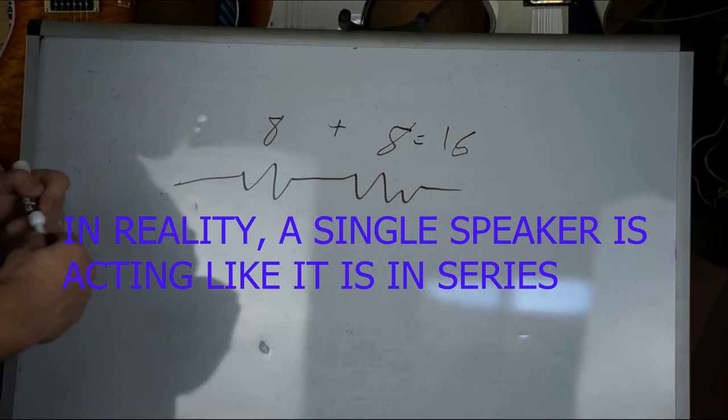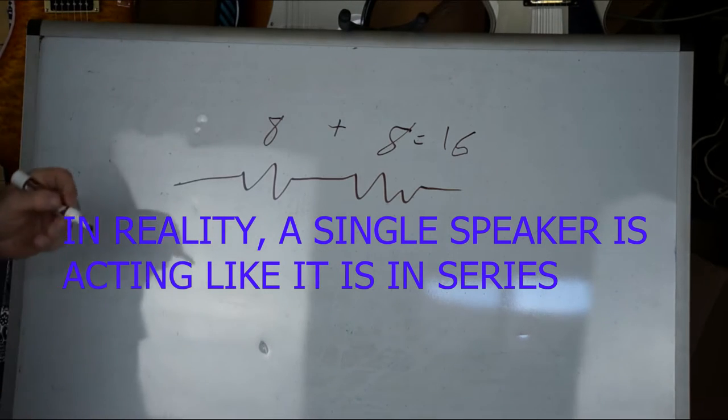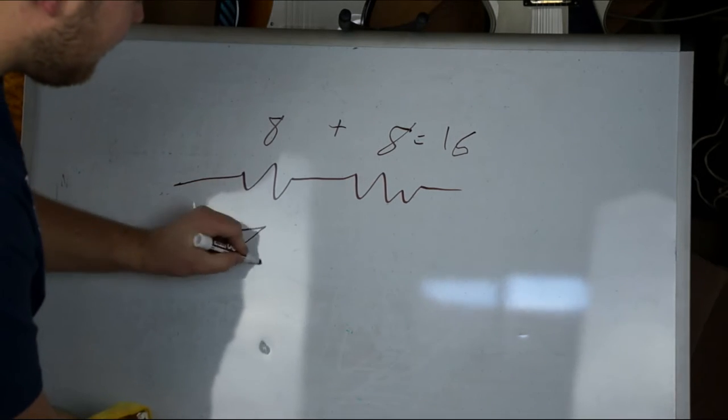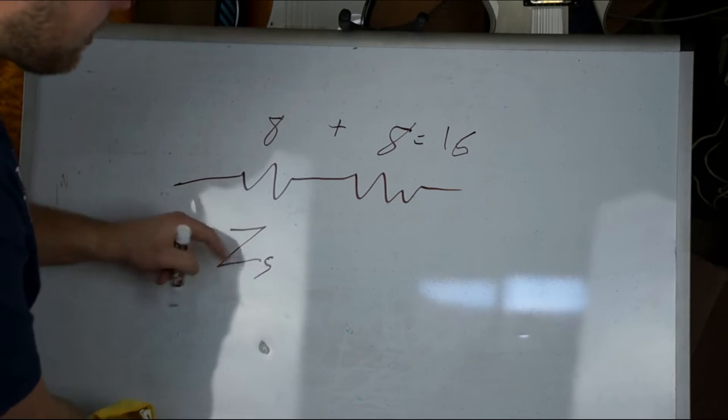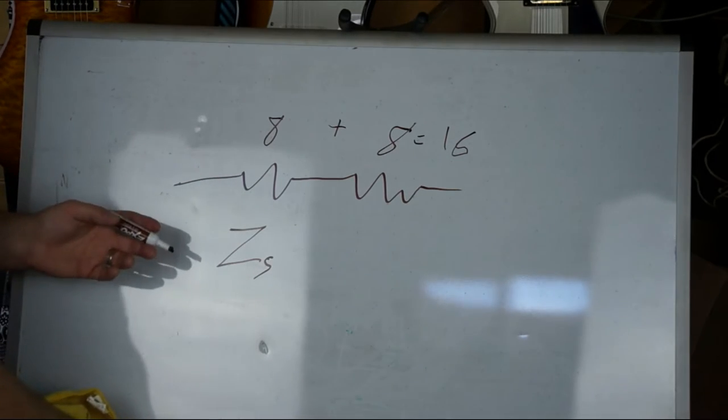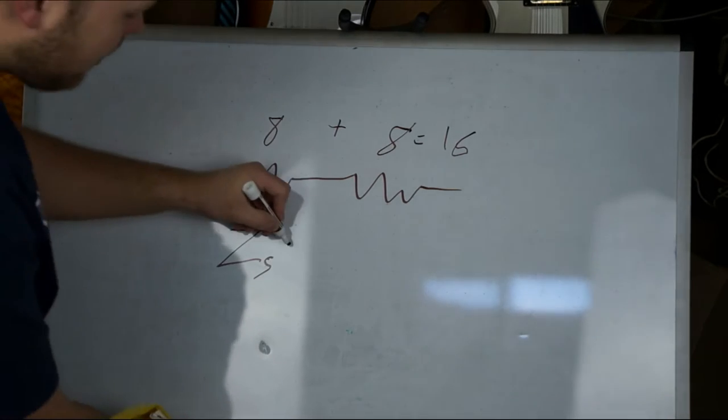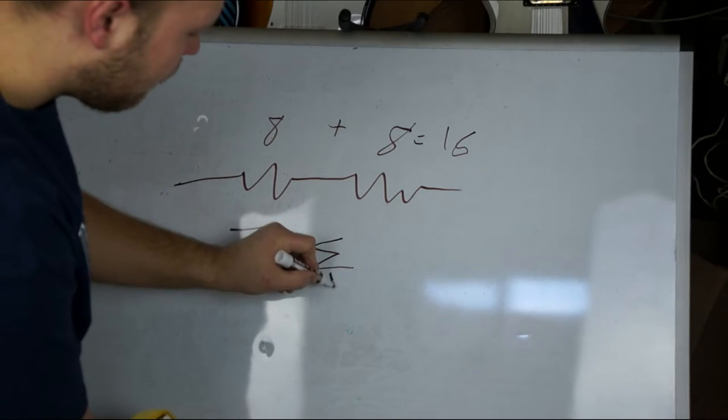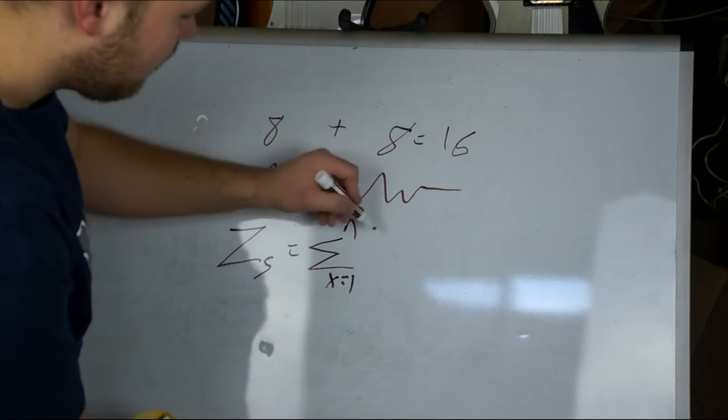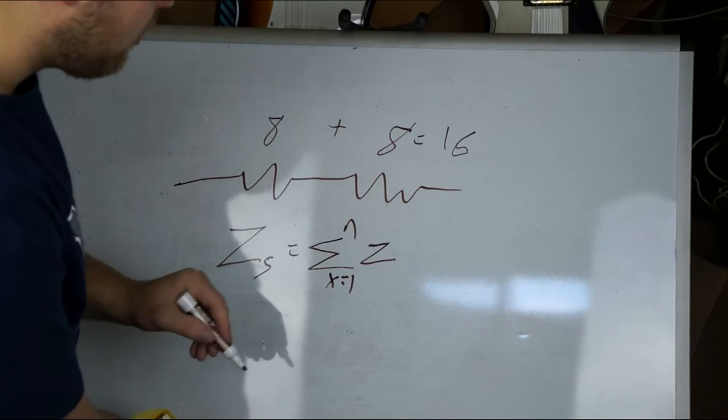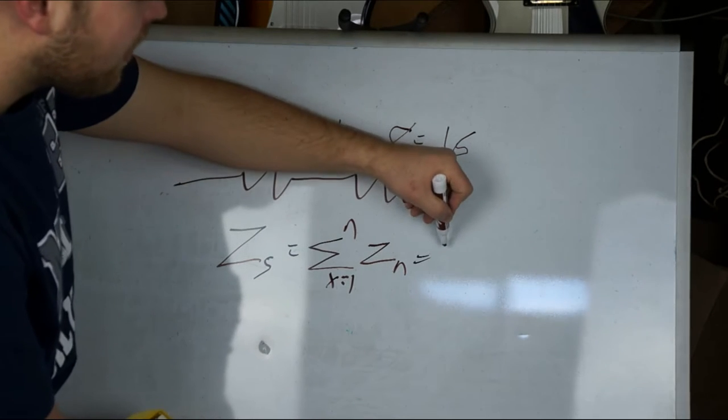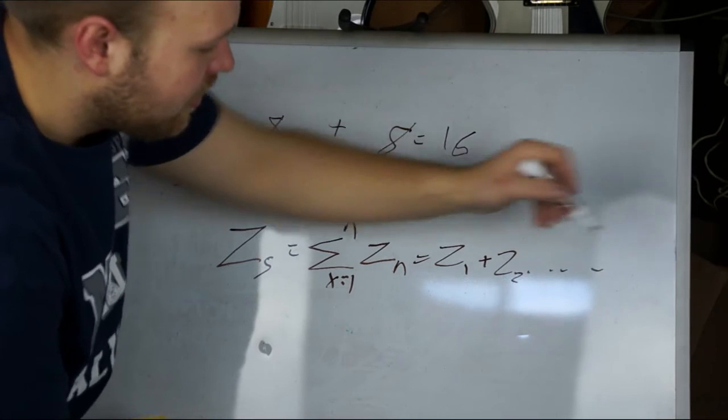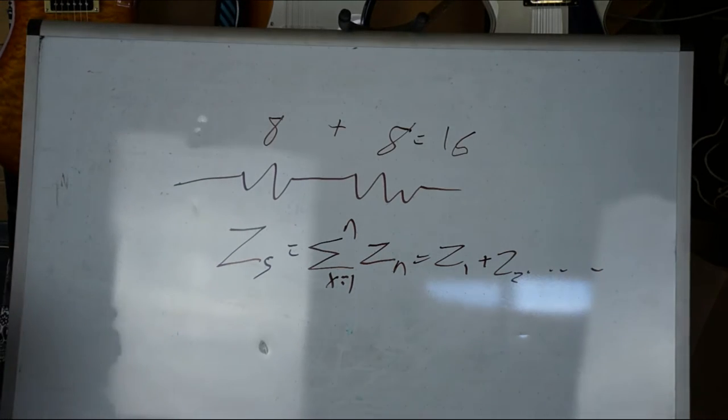All right, so now, mathematically what that is, if any of you are curious, I'll go ahead and write that out. Z is impedance, so Z sub S is what I'm calling the impedance in series, equals the sum from X equals one to N of your impedance with N. That's just what we talked about, right? It's just Z1 plus Z2 extended out. Series, easy enough.